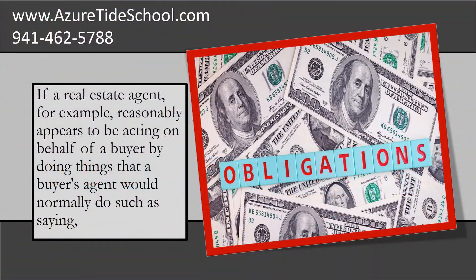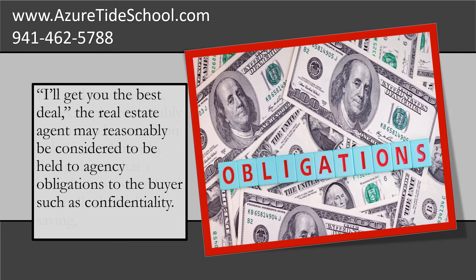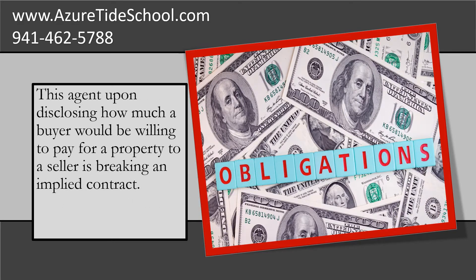If a real estate agent, for example, reasonably appears to be acting on behalf of a buyer by doing things that a buyer's agent would normally do — such as saying, 'I'll get you the best deal' — the real estate agent may reasonably be considered to be held to agency obligations to the buyer, such as confidentiality. This agent, upon disclosing how much a buyer would be willing to pay for a property to a seller, is breaking an implied contract.